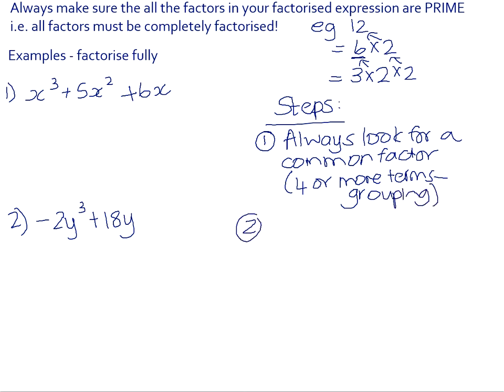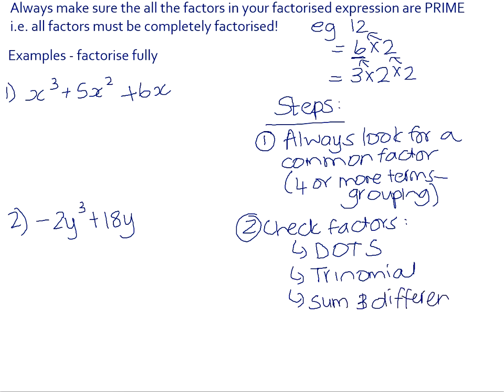And then secondly, if there wasn't a common factor or you've taken it out, so you must just check your remaining factors. So check your factors and look to see. Are any of them the difference of two squares? Are any of them a trinomial? Could you factorise them using a trinomial? And then something we haven't looked at yet but we're going to do in the next video is something called the sum and difference of cubes. So if you follow that and you go through that little process, it can just help you to figure out where you need to go.